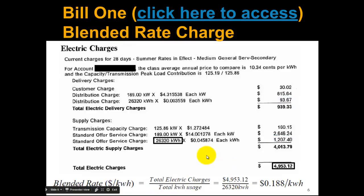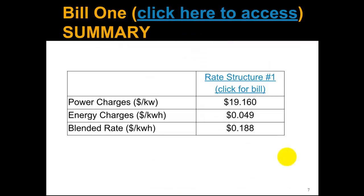Now let's look at another way to calculate this — and hopefully I'll convince you by the end of this video, this is not the way you want to do it. We really do not want to calculate electricity charges this way, but some energy auditing firms and some solar firms still do it this way. If we just take the total kilowatt hours and the total charges and divide the charges by the kilowatt hours, we get almost 19 cents per kilowatt hour — that's sometimes called a blended rate. Bill number one has very high power charges, relatively low energy charges, and the blended rate is relatively high as well.